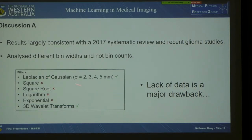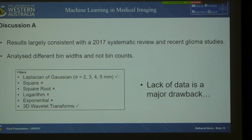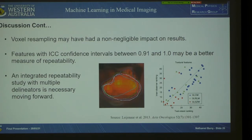For future radiomic studies, certain filters in the middle should probably be avoided as they tend not to improve repeatability and are generally not prognostic in the literature. The biggest drawback is our lack of data — having eight patients with test-retest imaging is basically the bare minimum for any repeatability study, and future studies are warranted with cohorts of maybe 20 to 30 patients to validate these results. Also, voxel resampling may have had a non-negligible impact on results. We defined a stable feature using ICC ≥ 0.85, but a better definition might have incorporated confidence intervals, perhaps using an interval between 0.91 and 1.0, which may have been more consistent with the literature.